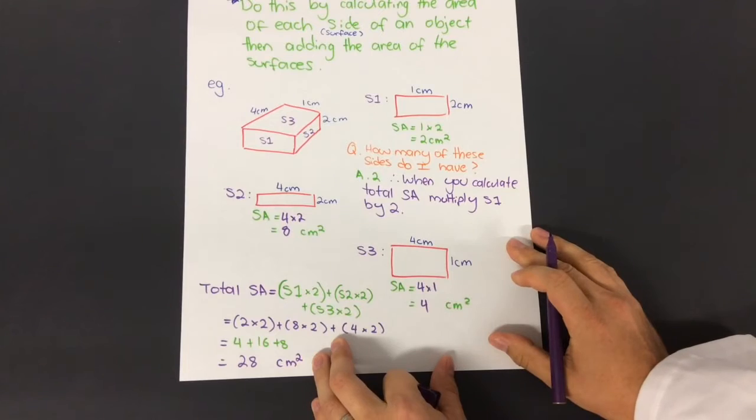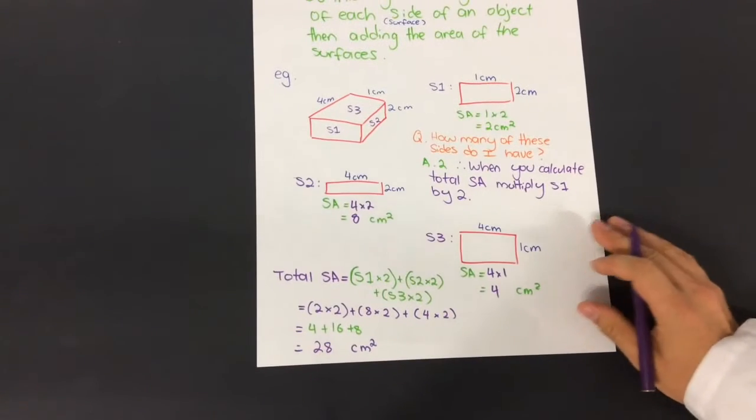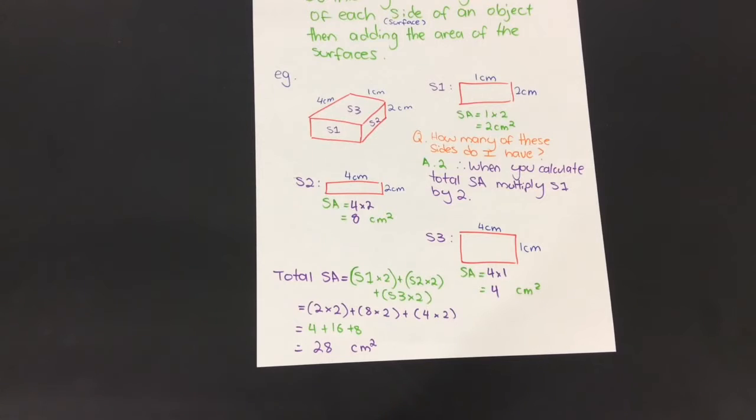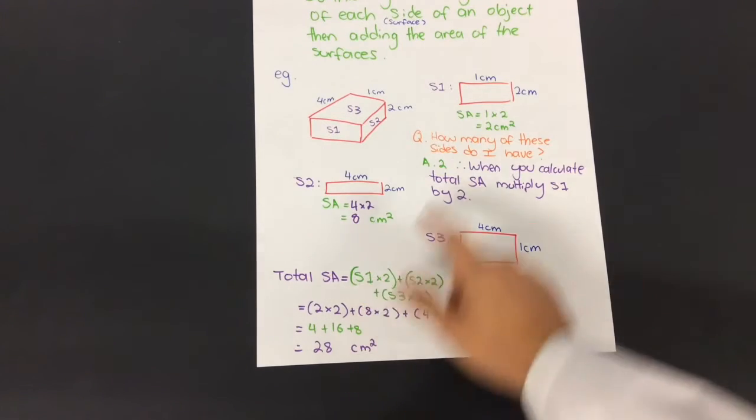Let's calculate the total surface area. I've just put it in brackets to make it easier for you to visualize, but sometimes you don't have to do that when you've got a less complicated object, such as a cube where all the sides are the same. So let's look at surface area one.